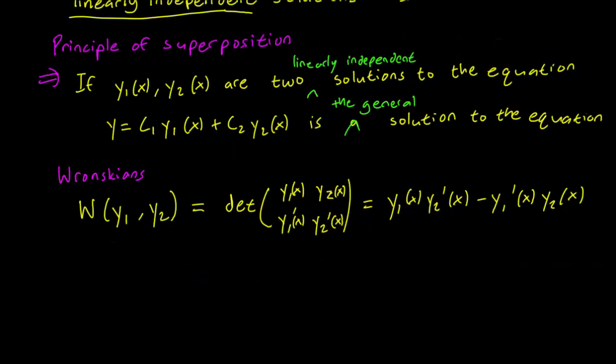So this is a Wronskian. It is normally written down as W(y1, y2). So this is a Wronskian of two solutions of a differential equation. And it's simply a determinant of a matrix.